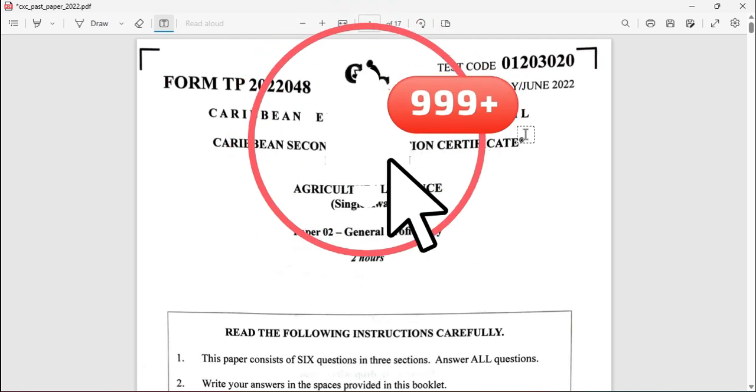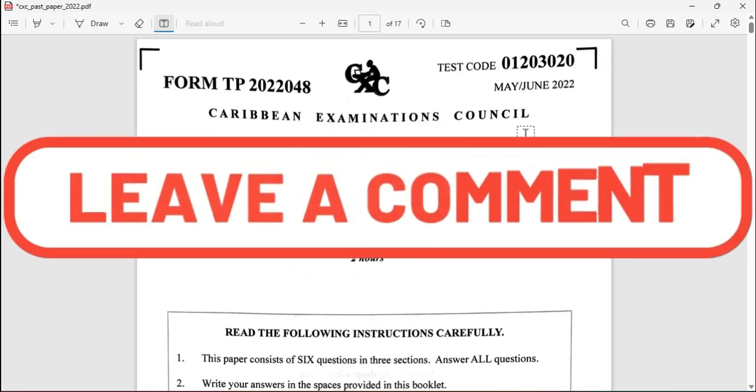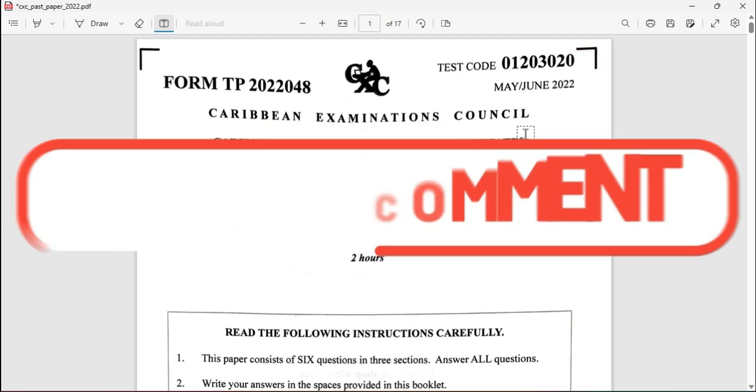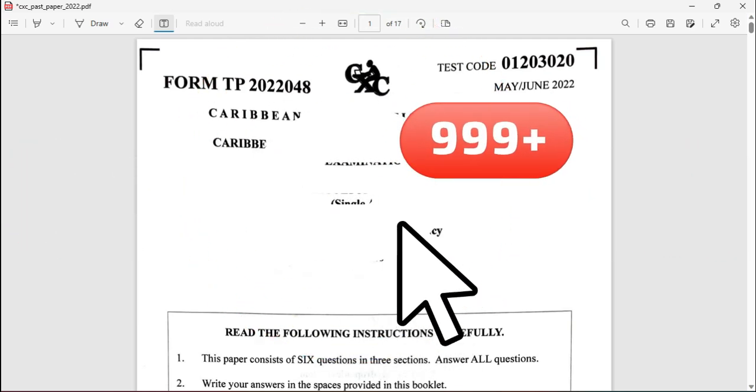Remember to leave us a comment, tell us where you are watching from and what's the name of your school. At the end of this video you are going to be seeing on screen some other videos that you can choose to watch: agriculture, human and social biology, and biology. Choose one of those videos to continue your CSEC preparation.